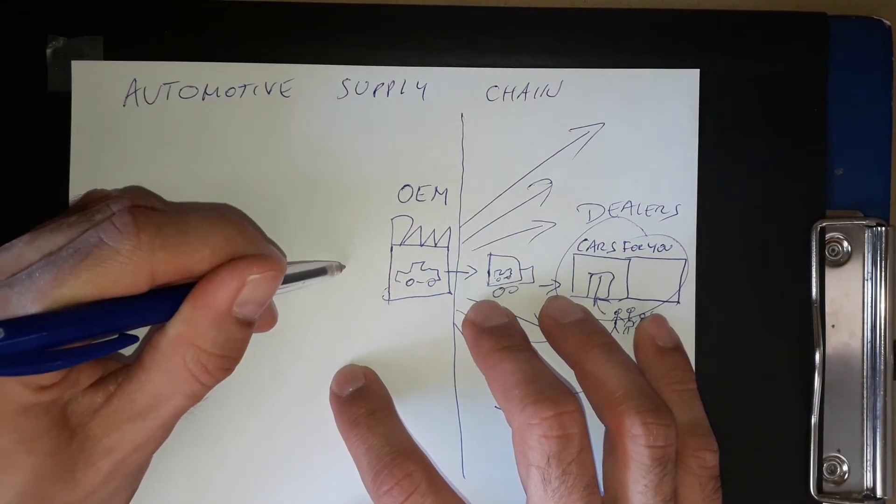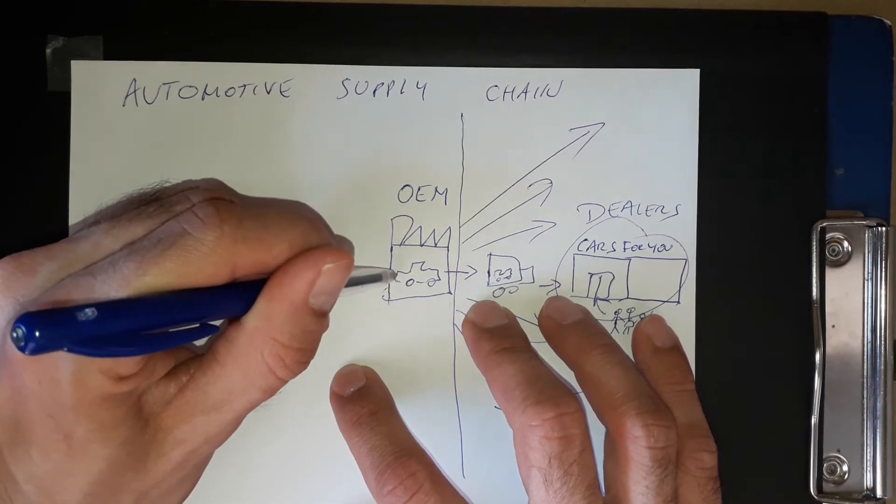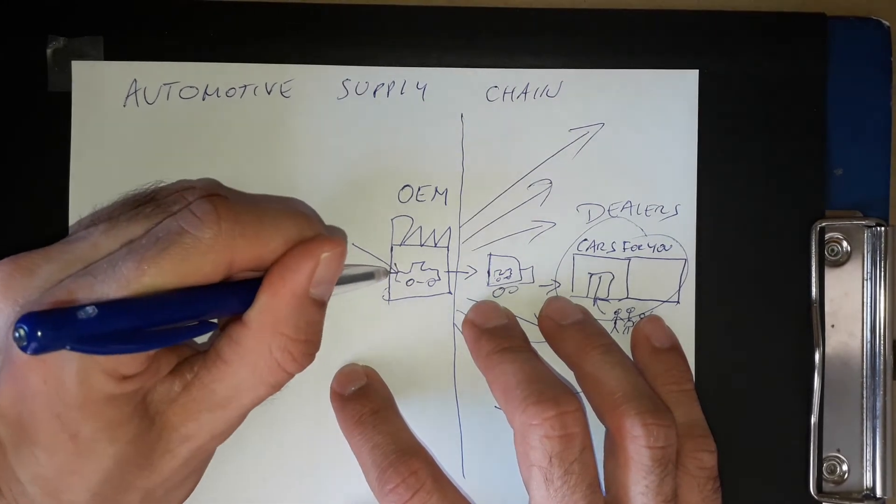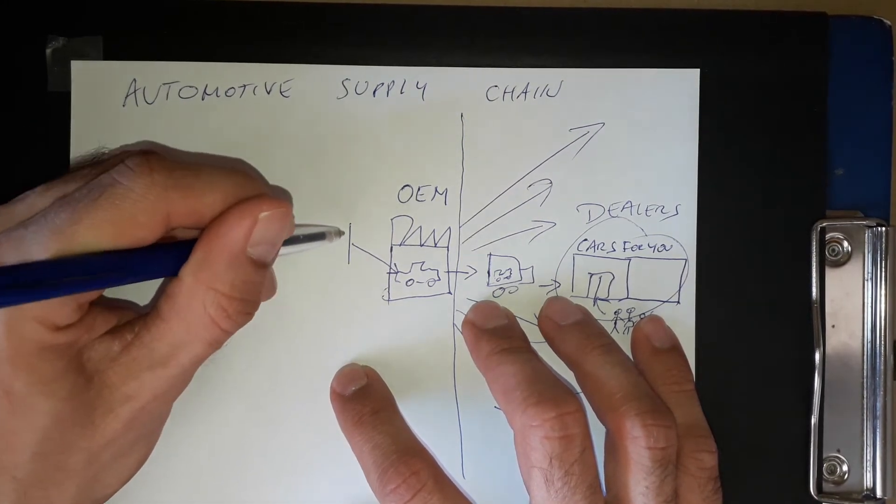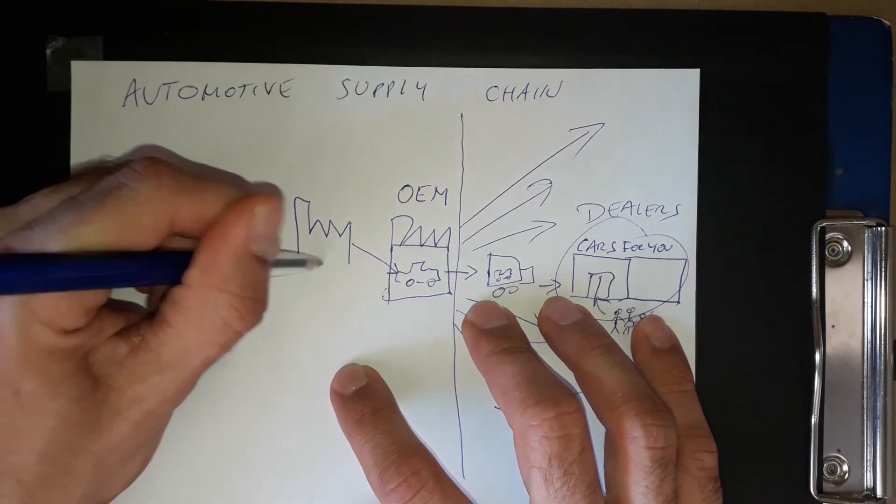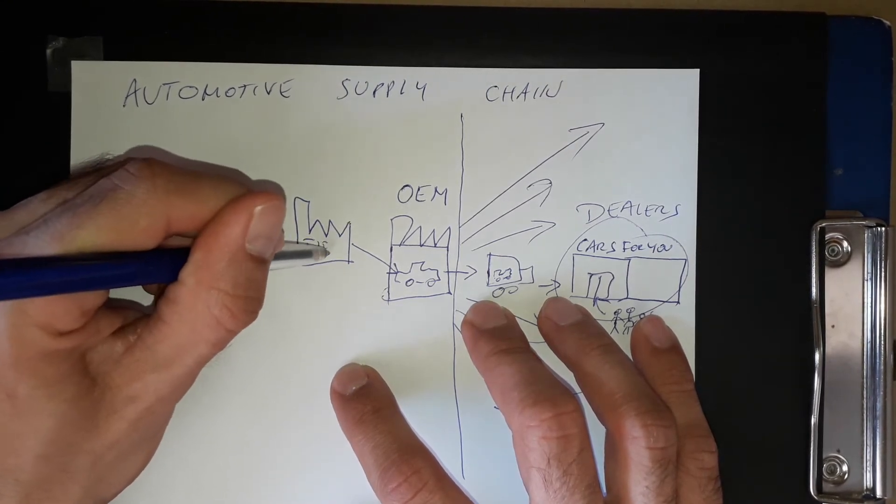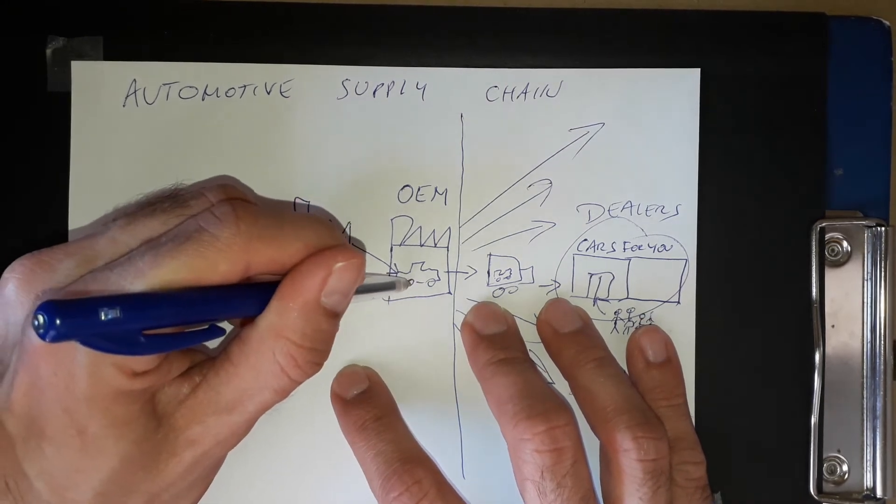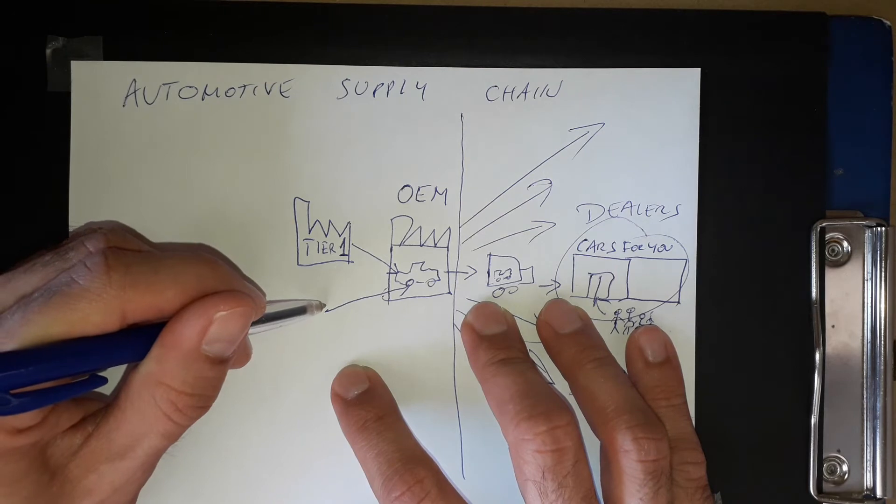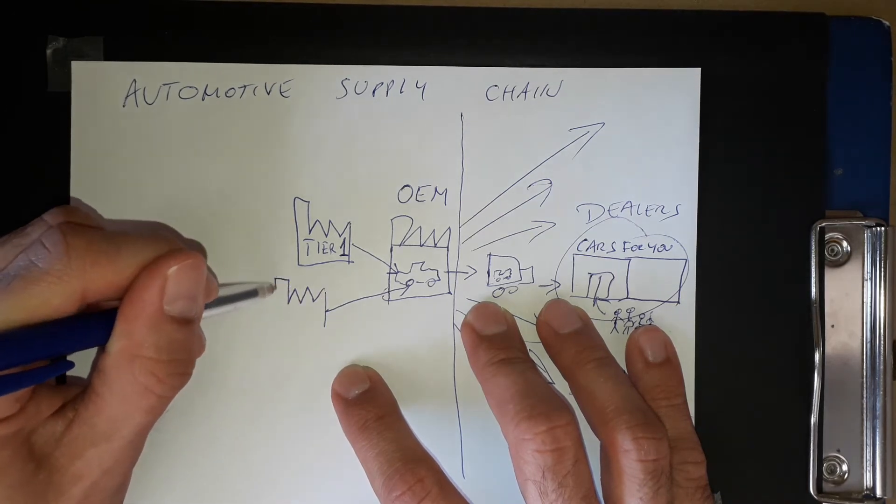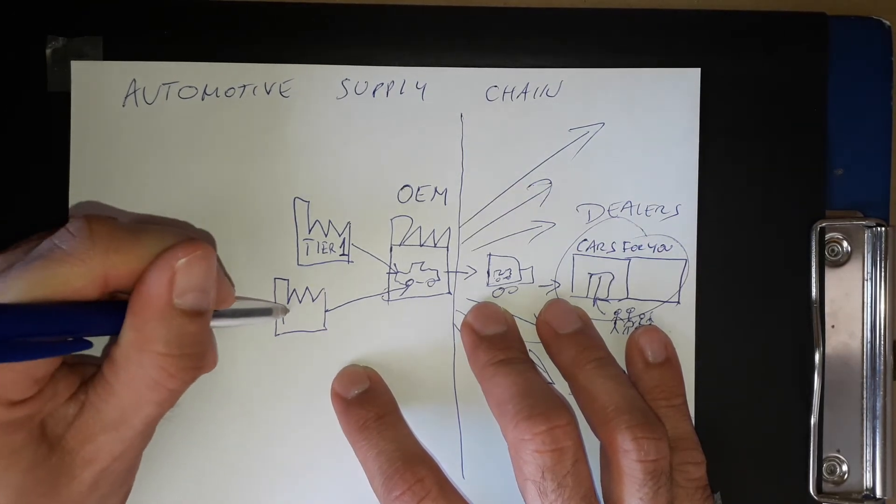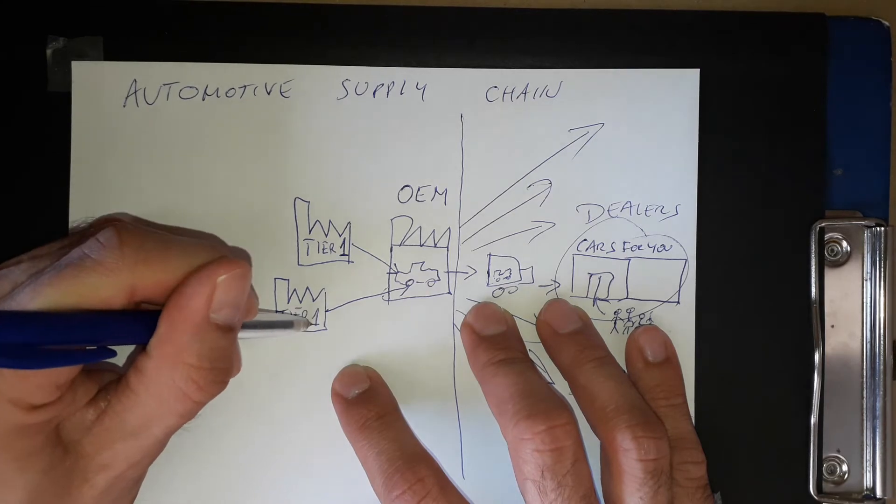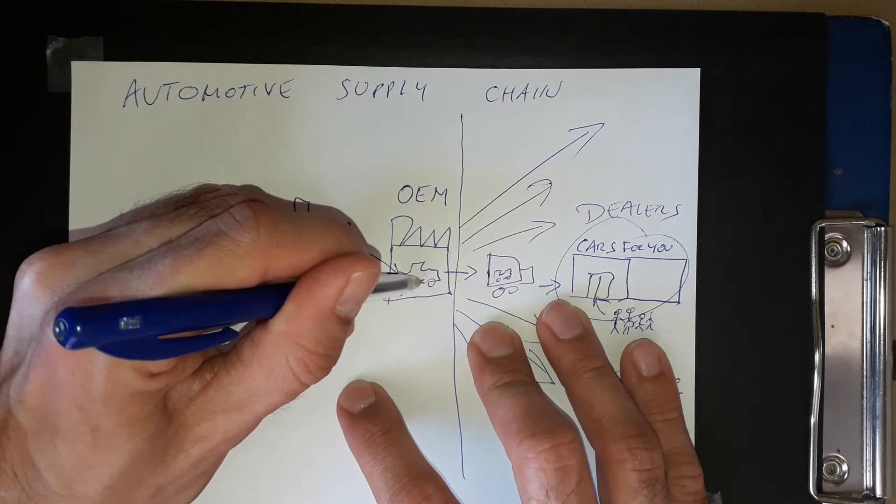For every component, like for this metal part, we have the tier one supplier. For the wheel, maybe with the tire already, it's like a sub-system. We have a tier one for the battery pack.